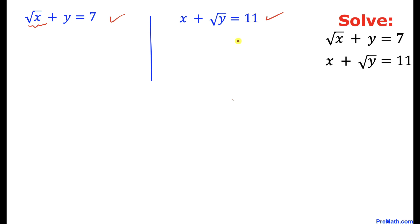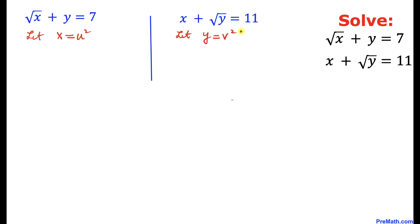Since we are dealing with the square root of x and square root of y, let me call x equal to u squared, and on this side let y equal to v squared. We will replace x equals u squared and y equals v squared in both equations.